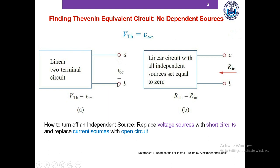The bottom line is: to compute the Thevenin voltage you don't have to touch any other element in the circuit — just remove anything that you don't want to replace by the Thevenin equivalent. Now to compute the Thevenin equivalent resistance, we focus on panel B. We turn off all the independent sources, replacing all voltage sources with short circuits and all current sources with open circuits, and then compute the equivalent resistance of terminals A and B. This is our Thevenin resistance.